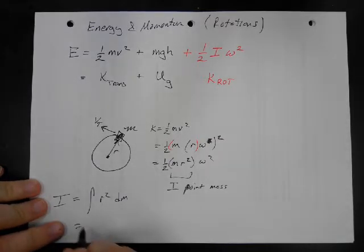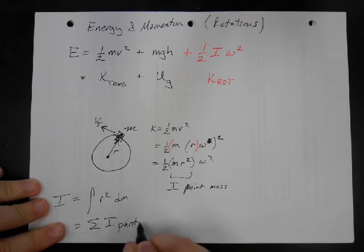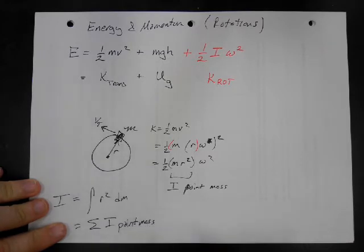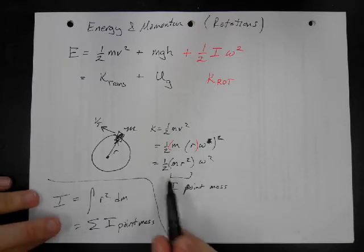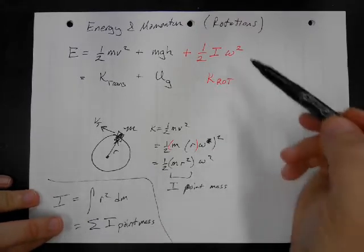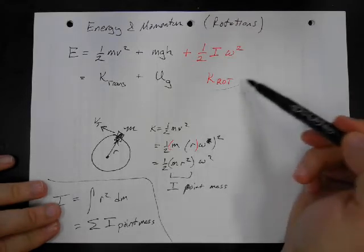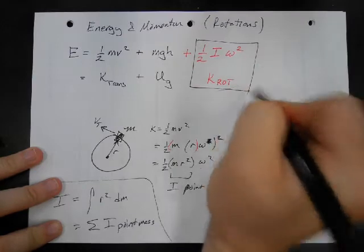So it is a sum of all the point mass moments of inertia. So this thing, for a point mass, the kinetic energy is one-half I omega squared. So for every object, its rotational kinetic energy is one-half I omega squared.